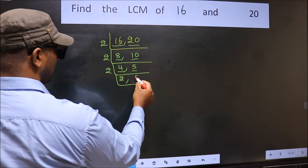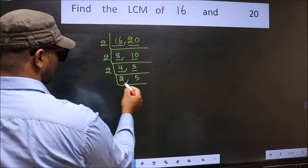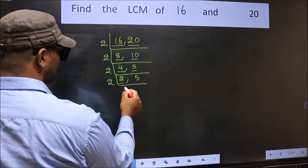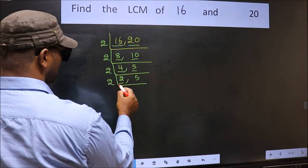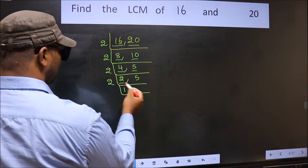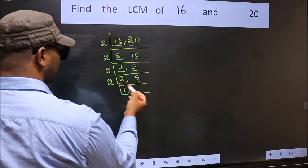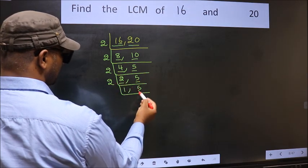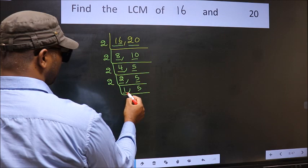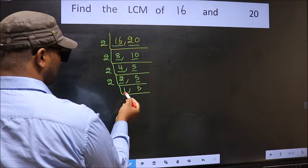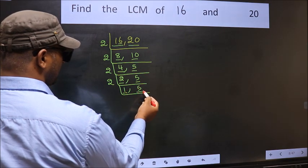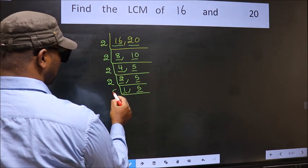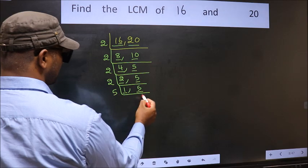The other number is 5, not divisible by 2, so we write it down as it is. Now here we have 2. 2 is a prime number, so 2, 1 is 2. The other number 5 is not divisible by 2, so we write it down as it is. We got 1 here, so focus on the other number 5. 5 is a prime number, so 5, 1 is 5.